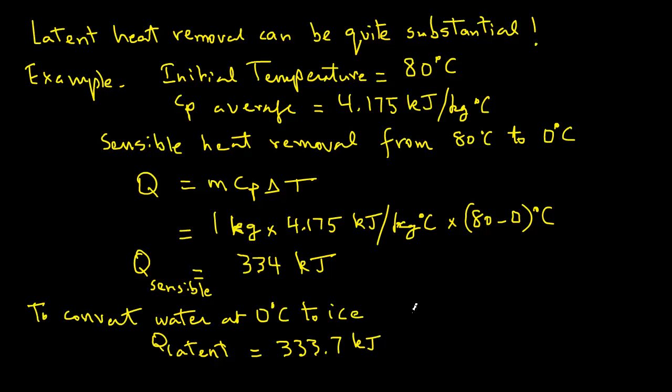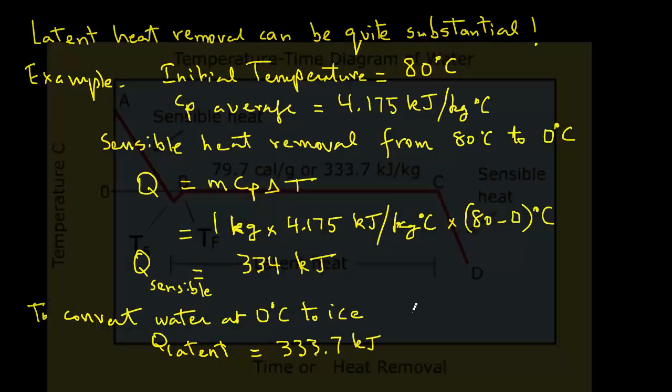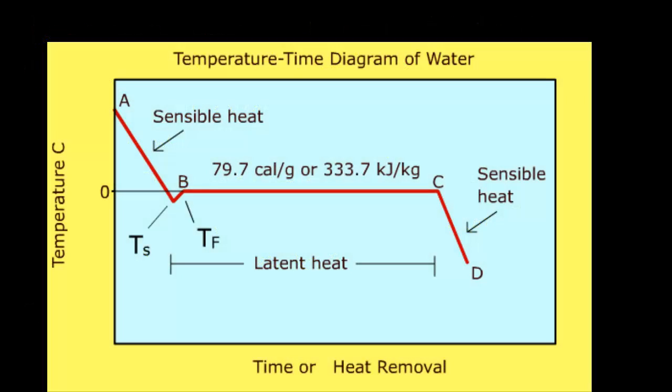What we find from this example is that the removal of latent heat to convert water into ice is equivalent to changing the heat content of water from 0 degree C to 80 degree C. As you can see, latent heat removal in a freezing process can represent a substantial amount of heat.